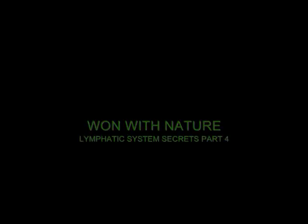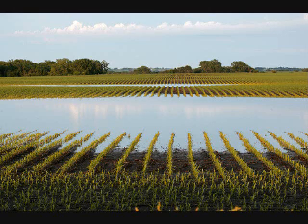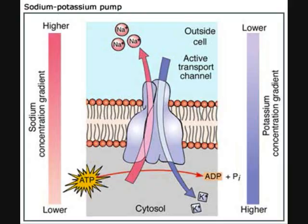Hi, this is Sean from One with Nature. This is part 4 on Lymphatic System Secrets. When we left off, we found out what happens when albumin goes into the cellular environment, attracts water, drowns the cells, and the sodium-potassium pump, which generates electricity inside each individual cell, is shut down. Now the cells aren't dead — they're just asleep.